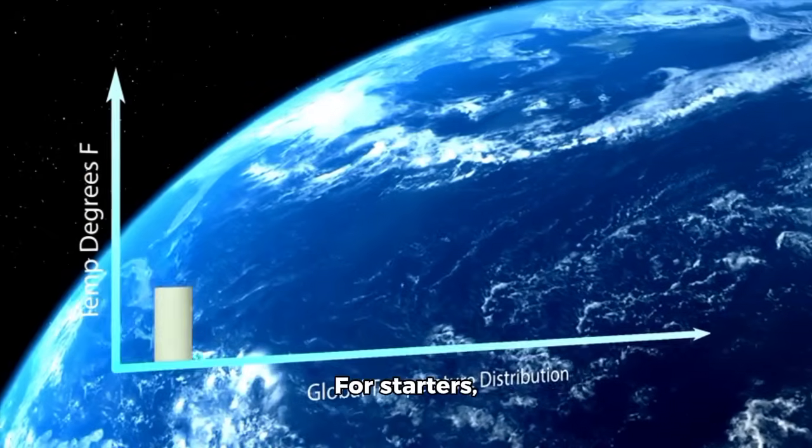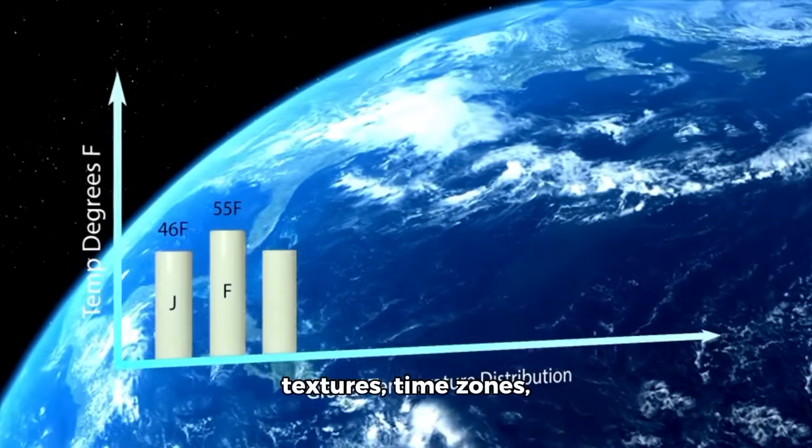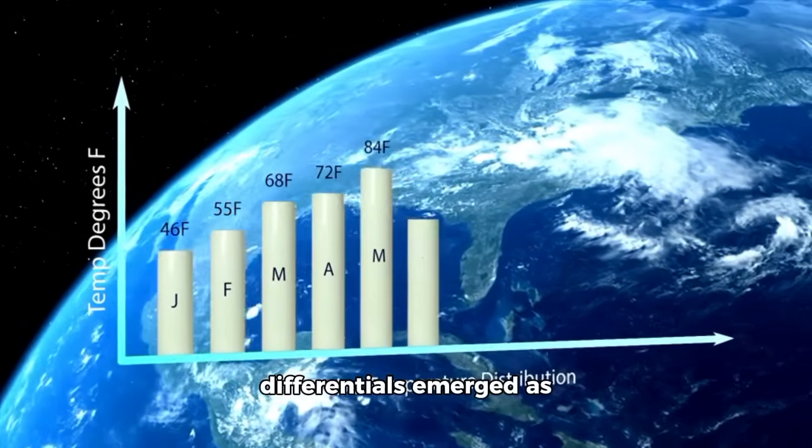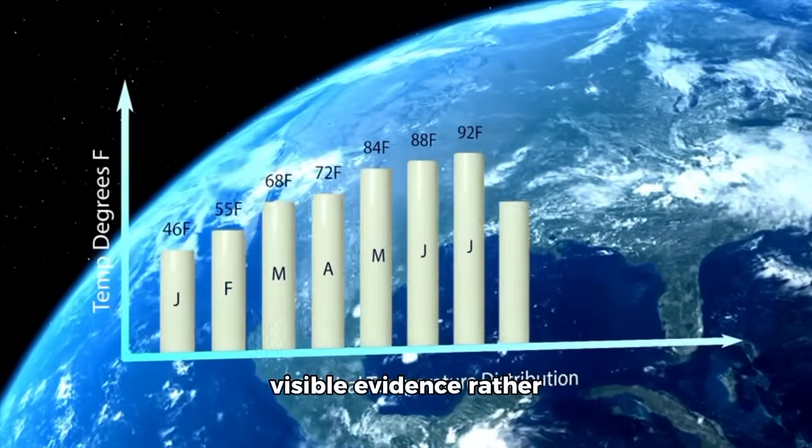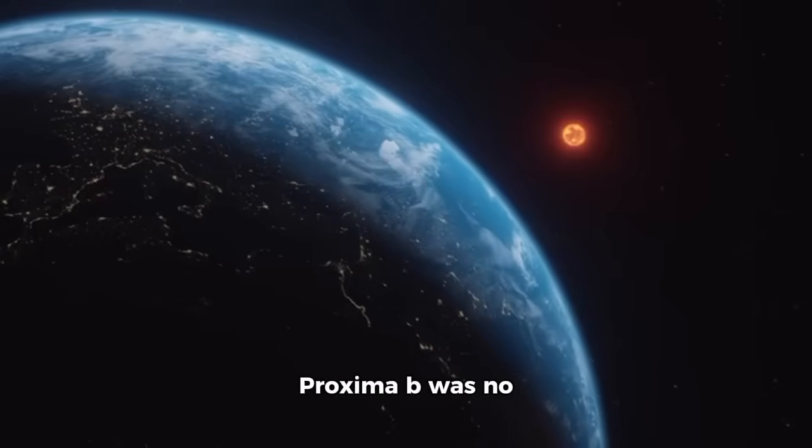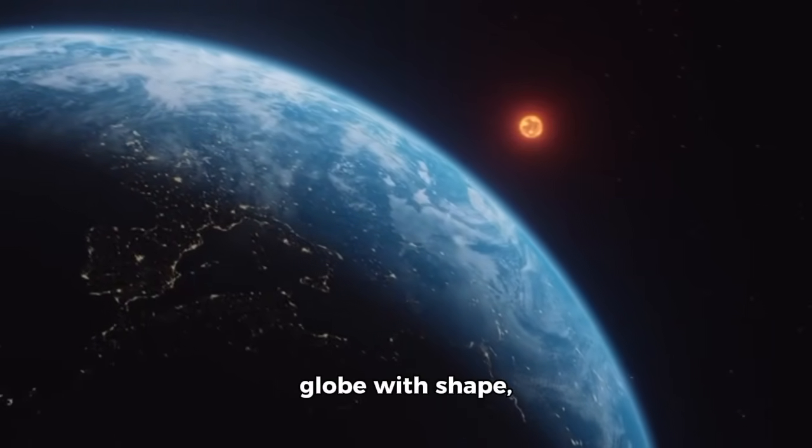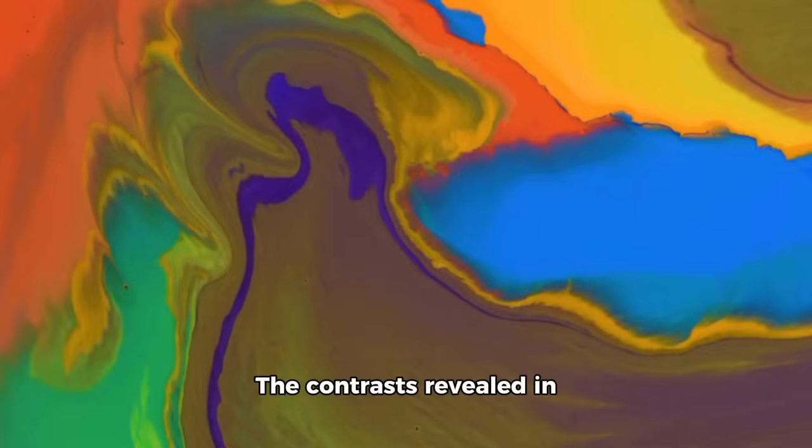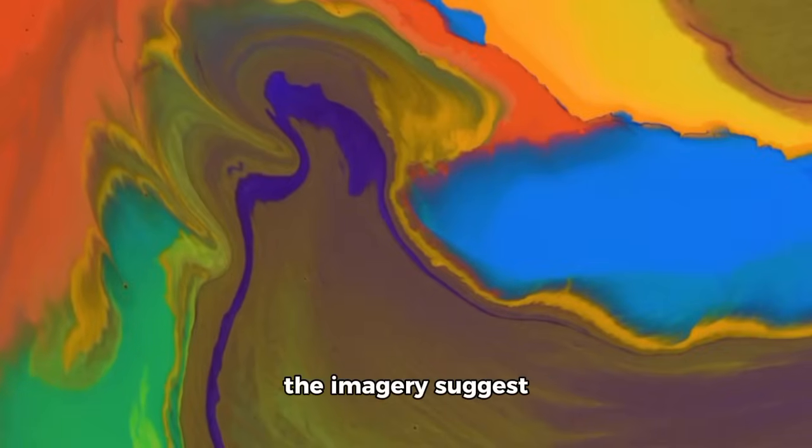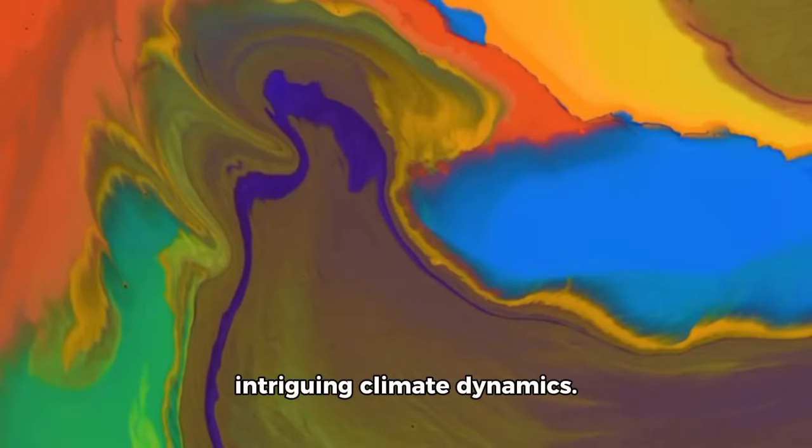For starters, temperature, surface textures, time zones, and atmospheric differentials emerged as visible evidence rather than theoretical constructs. Proxima b was no longer a statistical outlier, it grew into a globe with shape, light, and secrets.